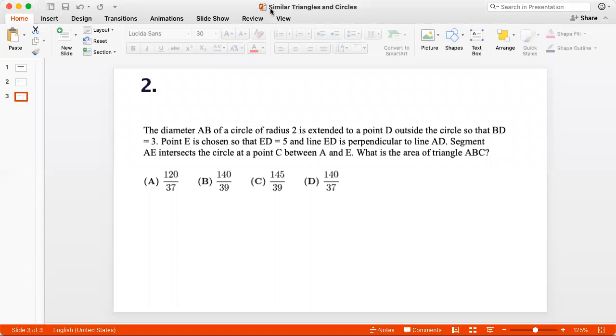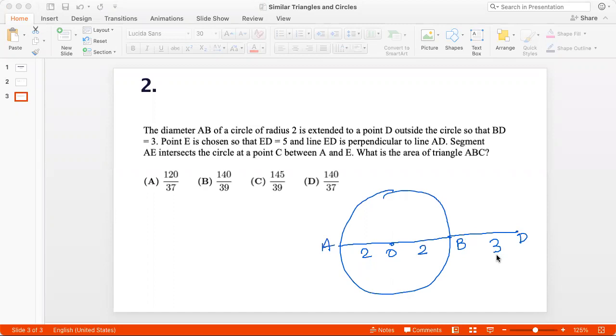Let's go to question 2. The diameter AB of a circle of radius 2. So let's draw a circle. Let's call this the diameter AB and let this be the center and the radius is 2. So this is 2 and this is 2 is extended to a point D outside the circle, so that BD is 3. Point E is chosen so that ED is 5 and line ED is perpendicular to line. So let's say this is E and ED is 5 and this is perpendicular.